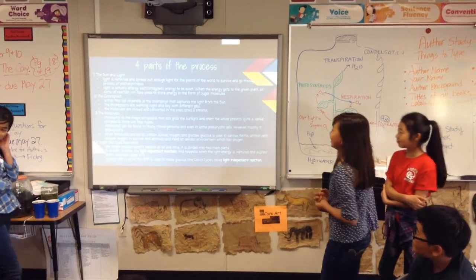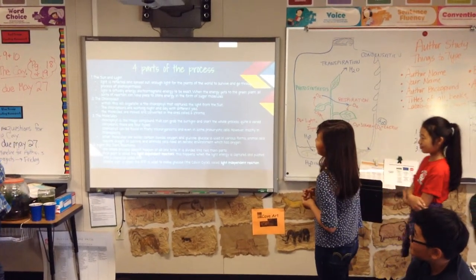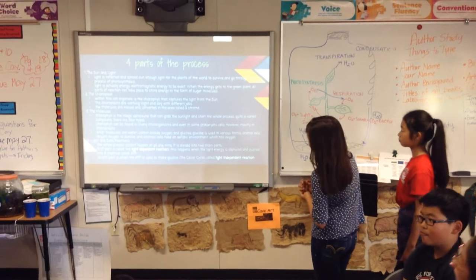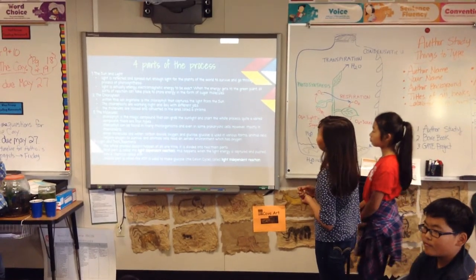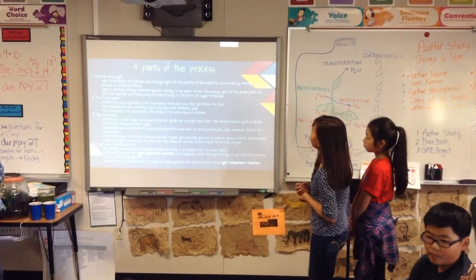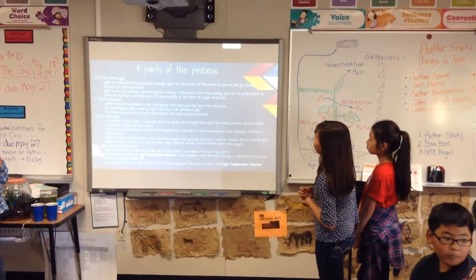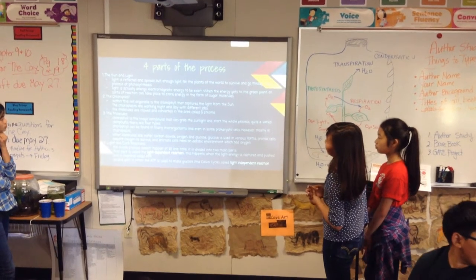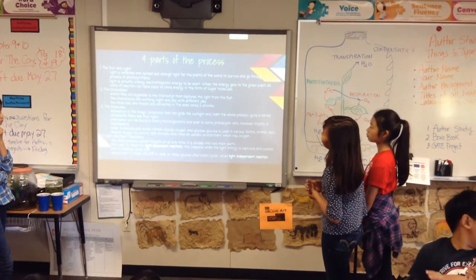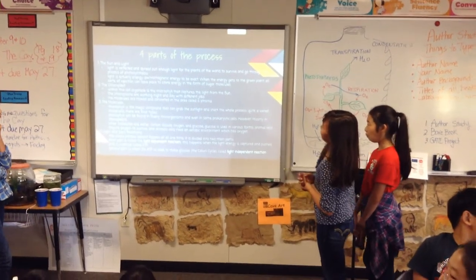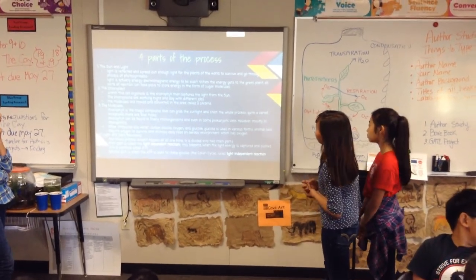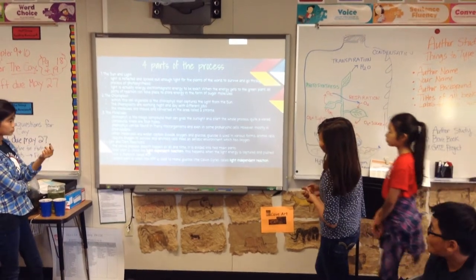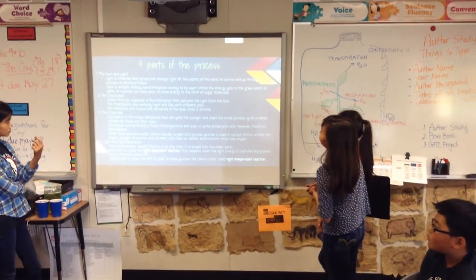The first of the four parts of the process is the sun and light. Light is reflected and spread out enough for the plants of the world to survive and go through the process of photosynthesis. Light is actually energy — electromagnetic energy to be exact. When the energy gets to the green plant, all sorts of reactions can take place to store energy in the form of sugar and minerals.